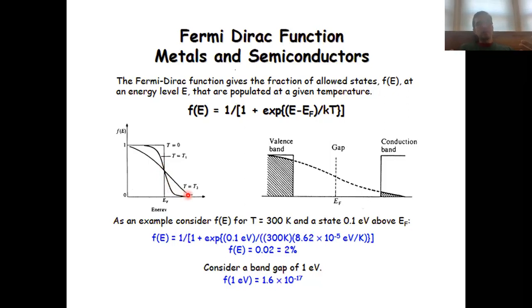The slope of this curve will become smaller and smaller the higher we go with the temperature. So at T equal to T2 the slope is smaller. Electrons in the ground state, which have a relatively low energy, are now already excited and go into an excited state, which leads to a flattening of this curve.